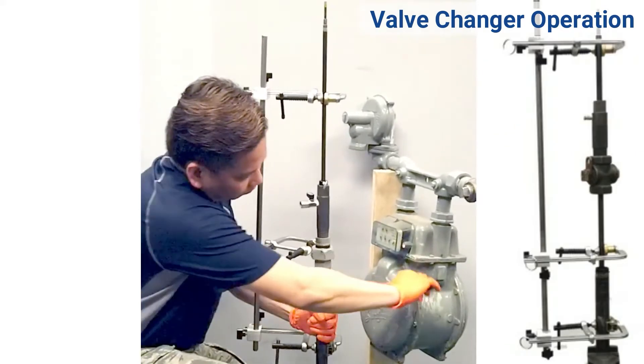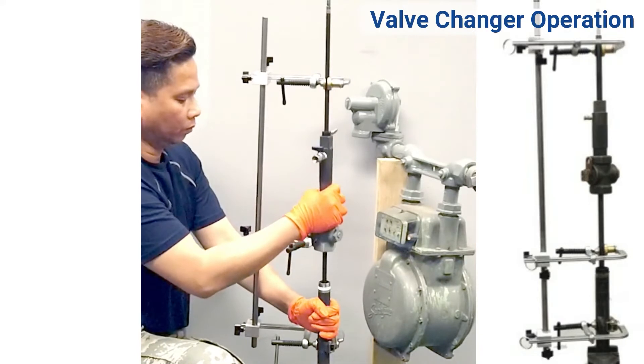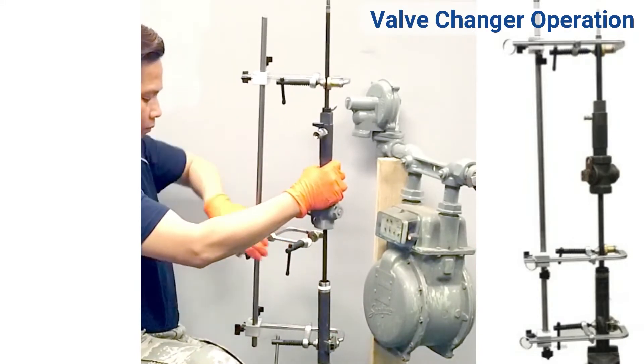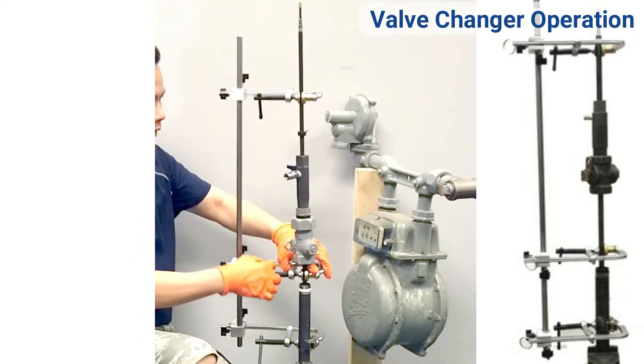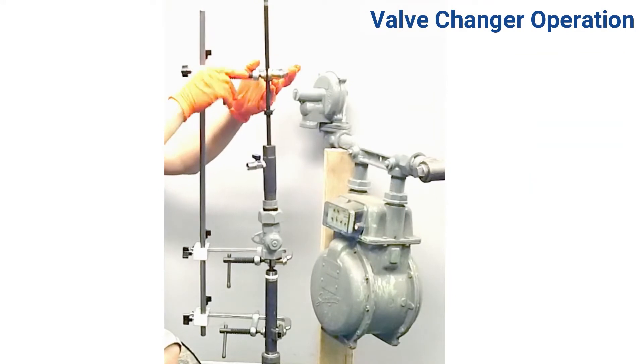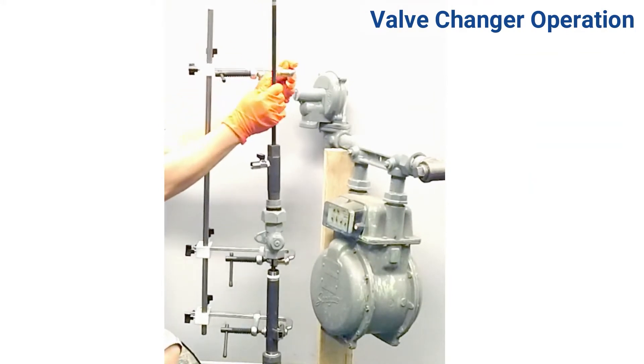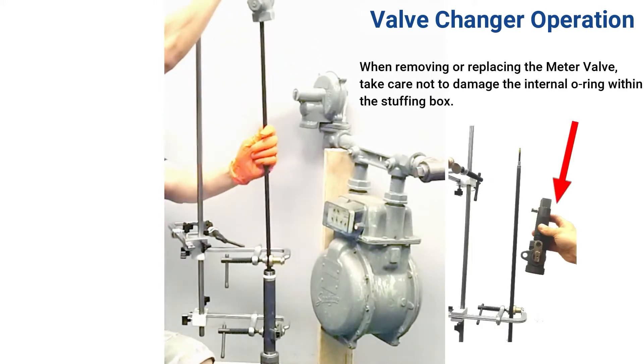Next, remove the meter valve from the riser and tighten the bottom clamp. Loosen and swing the top clamp out of the way. Remove the old meter valve with the stuffing box attached.